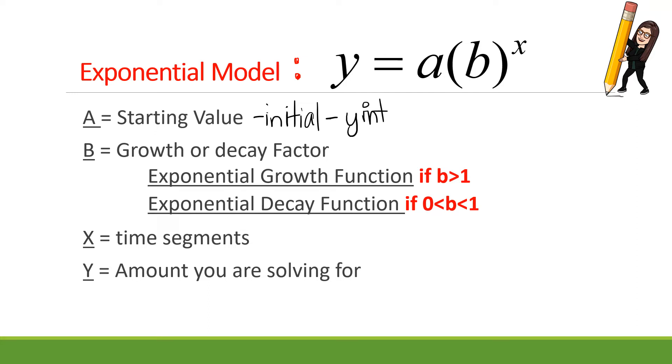B is your growth or decay factor. You're going to hear me use that word a lot, the growth or decay factor. Now what type of number it is determines what kind of function this is. So if b is greater than 1, if the factor is greater than 1, like 1.5, 2, 10, then it's exponential growth.